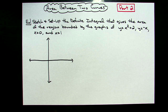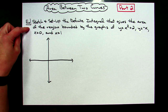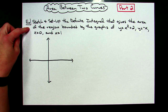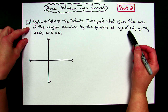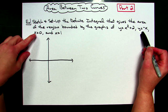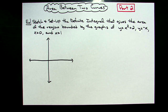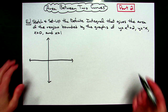So let's suppose that our example says: sketch and set up the definite integral that gives the area of the region bounded by the graphs of y equals x squared plus two, y equals negative x, x equals zero, and x equals one. I'm going to start out by doing a really rough sketch of this.